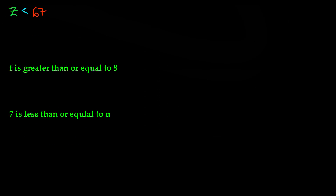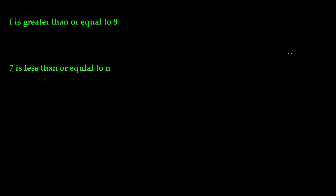Now let's look at our last two examples. It says f is greater than or equal to 8. Just because it says greater than or equal does not mean it's complicated — this is exactly how you'll write it, just as you did for greater than and less than. So underline your key terms. Our variable is f, and it's telling us it is greater than or equal to the number 8, meaning the value of f is either going to be 8 or greater than 8.